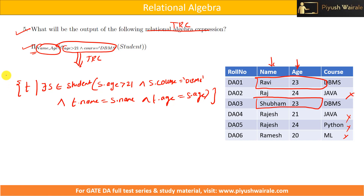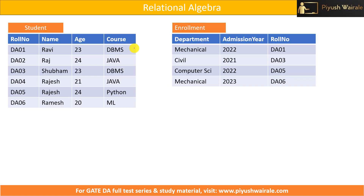All the things we have discussed so far are for only one table — the student table. But what if there are more than one table, or we need to join the tables? Then how do we write a TRC expression? We will see that now.